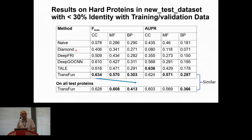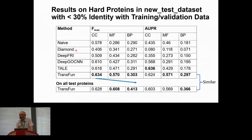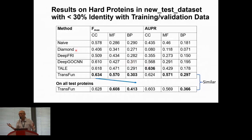In response to an audience question: the reason we train one model per function category follows the literature convention, but there is likely correlation between the three GO function categories, and training one model for all GO terms together could leverage multi-task learning. This is already a funded research direction we are working on. Combining all GO terms in one model — to see if one task helps another — is a great open question for the community.